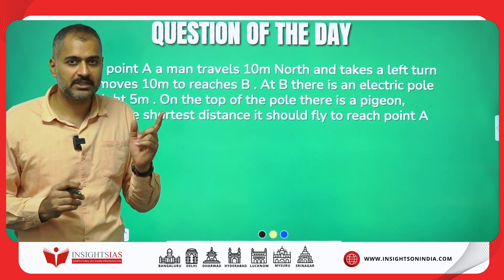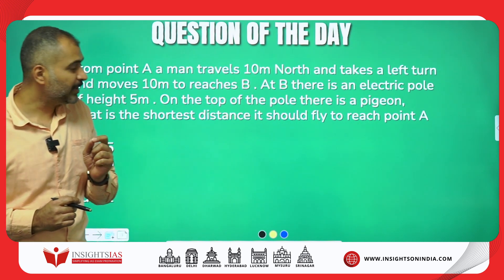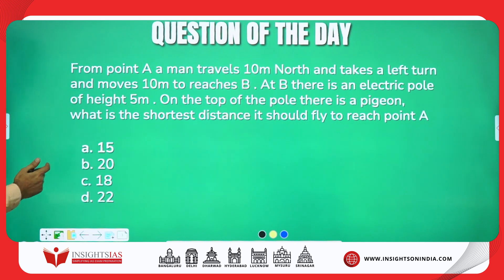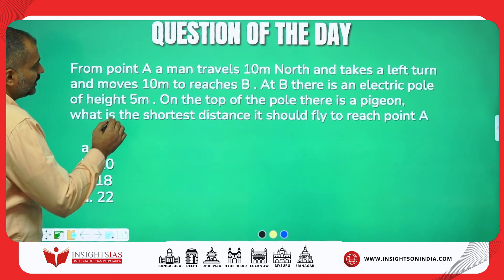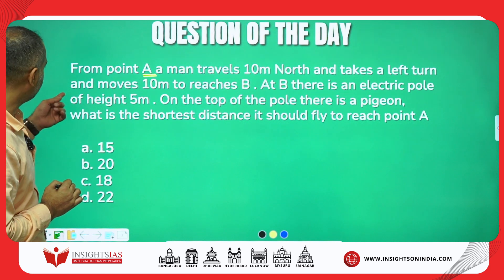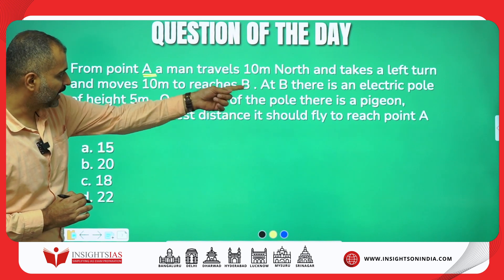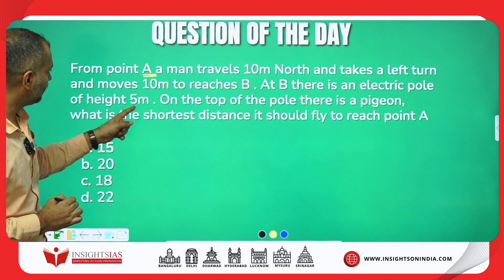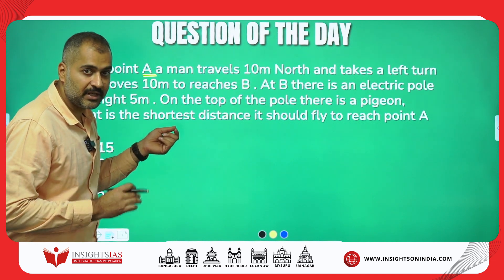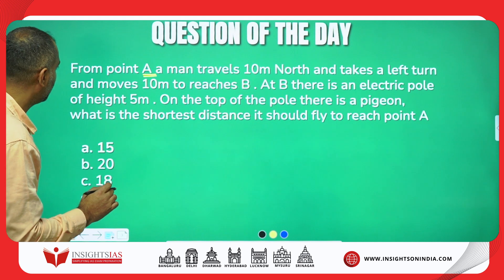Now, this is today's question — a very good question. I've picked it from the topic of Direction and Distance. The question says: from point A, a man travels 10 meters north and takes a left turn and moves 10 meters to reach B. At B there is an electric pole of height 5 meters. Whenever a direction question is given, you plot it — convert the question into figural form.